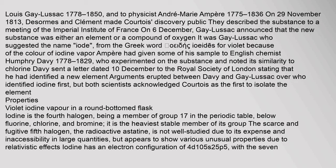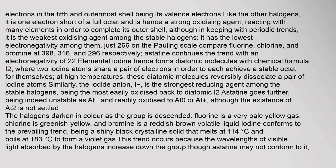Iodine has an electron configuration of 4d¹⁰5s²5p⁵, with seven electrons in the fifth and outermost shell being its valence electrons. Like the other halogens, it is one electron short of a full octet and is hence a strong oxidizing agent, reacting with many elements to complete its outer shell. In keeping with periodic trends, it is the weakest oxidizing agent among the stable halogens.